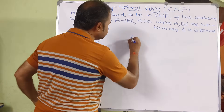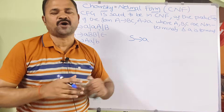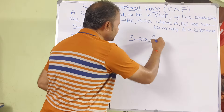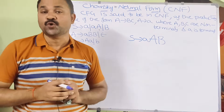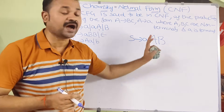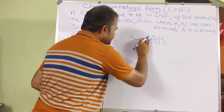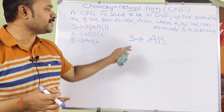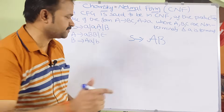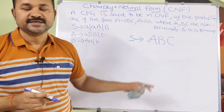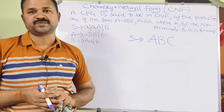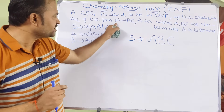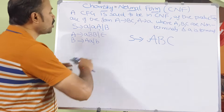Consider S implies a — this is a valid CNF production because a non-terminal is producing a single terminal. A production like S producing a terminal followed by two non-terminals is not valid CNF. S produces AB is a valid CNF production because a non-terminal is producing two non-terminals. However, a non-terminal producing three non-terminals is not valid CNF — only two non-terminals are allowed.